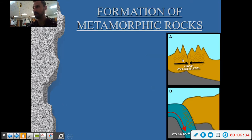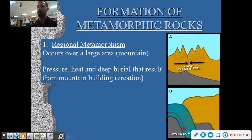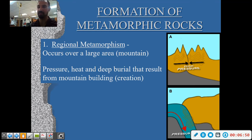You can see that distortion in this picture. Regional metamorphism occurs over a large area, usually where mountains form. There are large mountains of metamorphic rock — a good example is the Adirondack region in upstate New York, which has intensely metamorphosed rock. Pressure, heat, and deep burial result in mountain building, and pressure is the main thing that causes the distortion you see in metamorphic rocks.